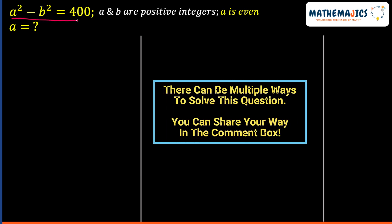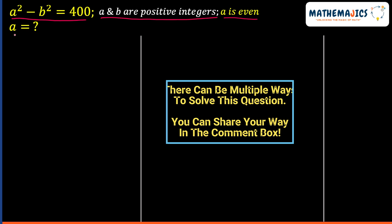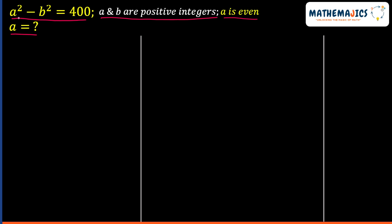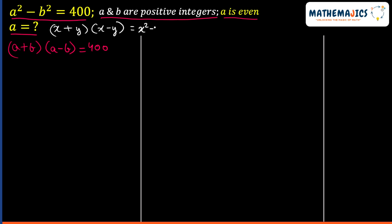We are given the equation a² - b² = 400, where a and b are positive integers and a is even. We need to find the value of a. To solve this, we can rewrite this equation using the algebraic identity (x+y)(x-y) = x² - y², giving us (a+b)(a-b) = 400.